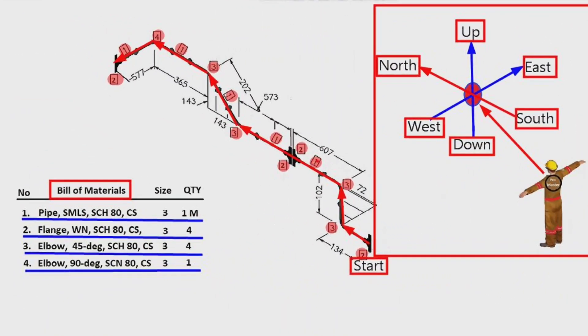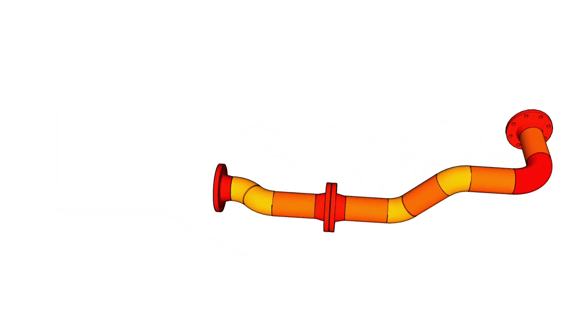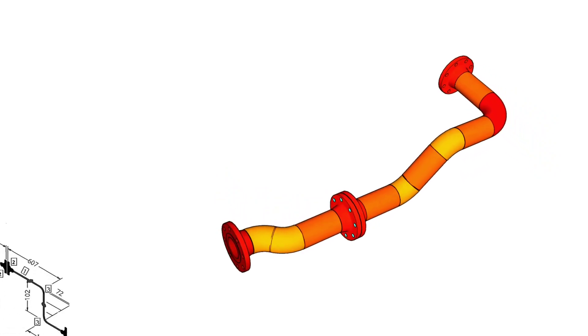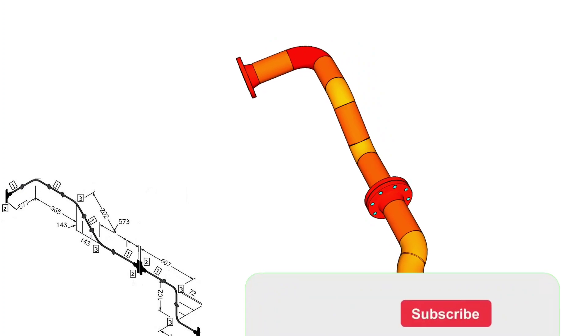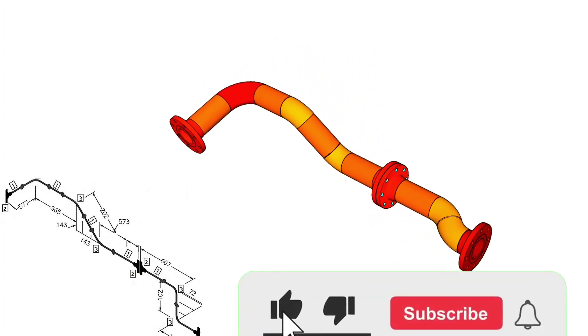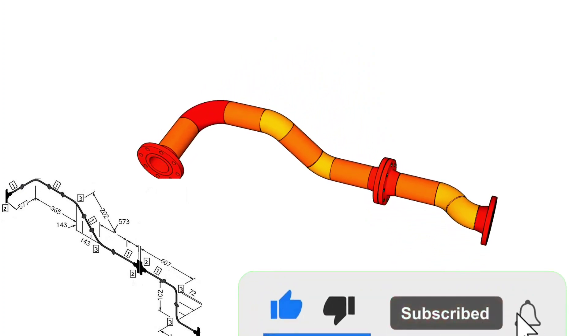We learned the materials which are used on this pipe drawing. Now, let's look at the 3D model view of this pipeline. The 3D view of pipeline helps us understand pipeline isometry more easily. By comparing the 3D model of the pipeline with the pipe isometric, the pipe drawing can be easily read.